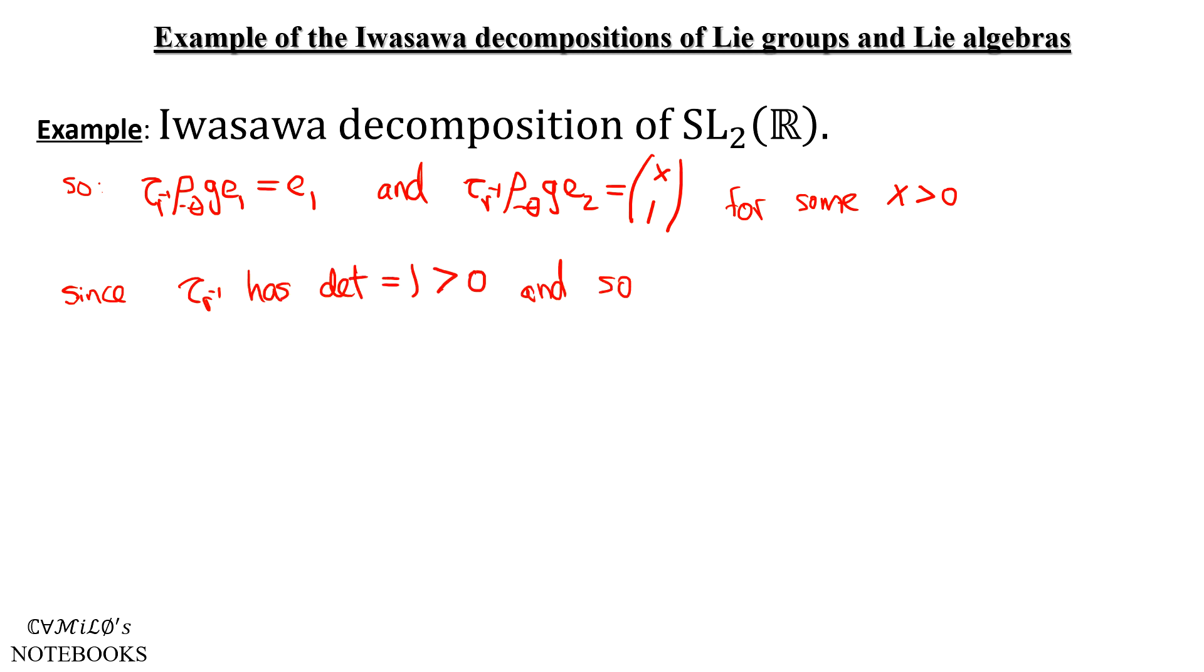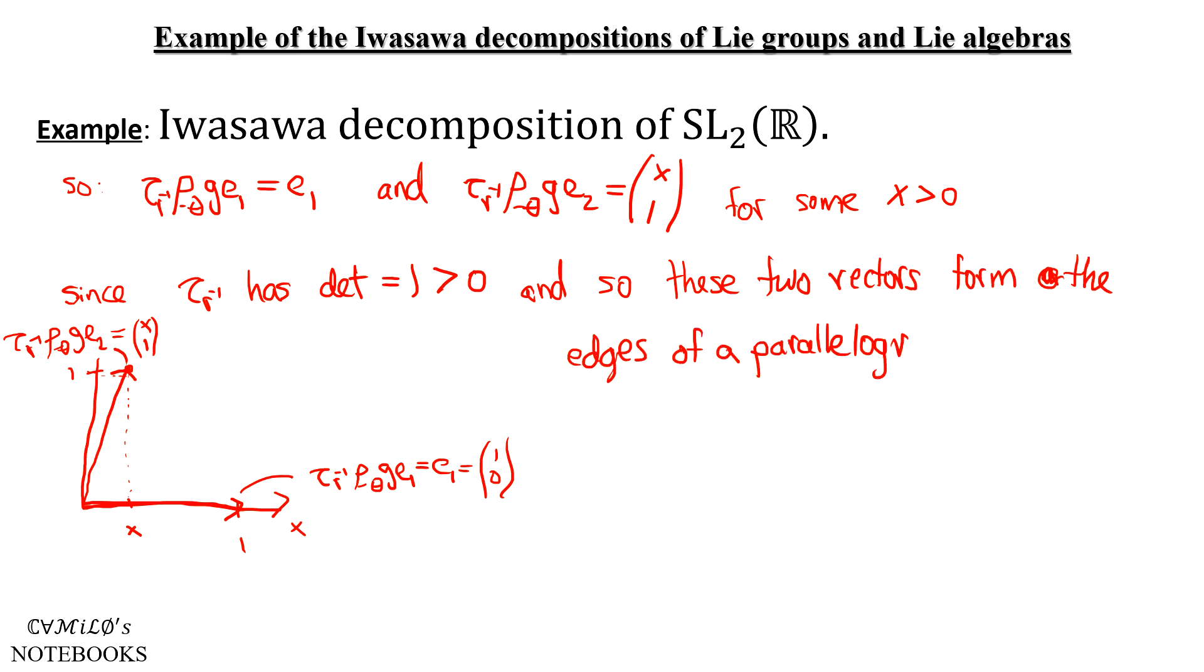So our picture looks like this. This composition is equal to E₁. And let's say this is the same transformation applied to E₂. And it has coordinates X, 1. So these two vectors form the edges of a parallelogram of area 1.